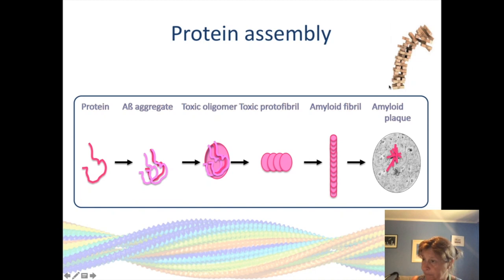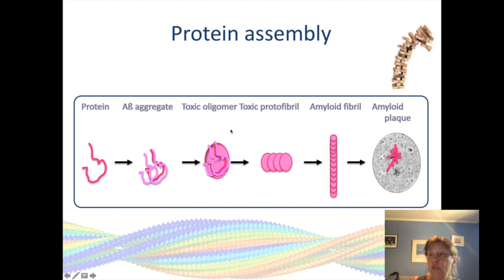The reason I call these toxic oligomers is because, rather than the fibers deposited in the tissue being the main toxic species, we actually believe in the research community that it's these smaller species forming as aggregation progresses that are actually the most important and most toxic form causing neurodegeneration.